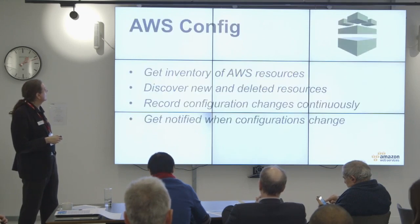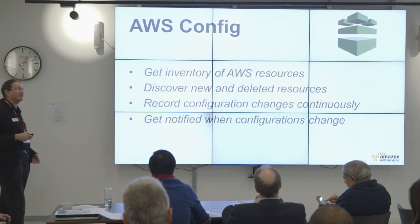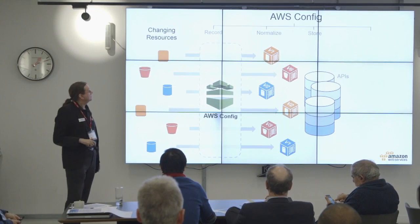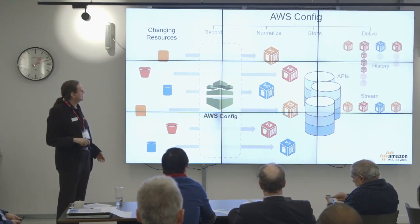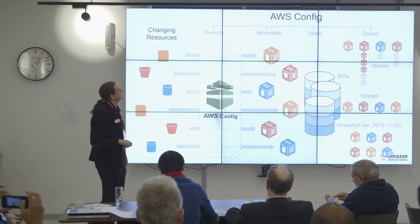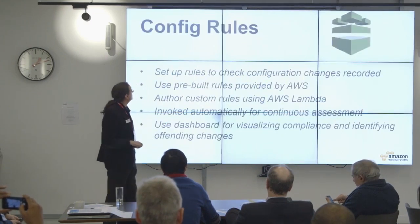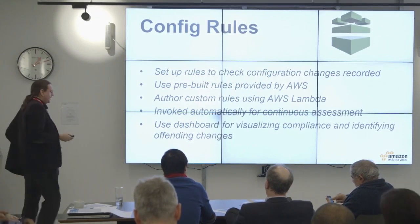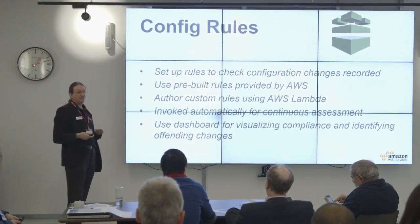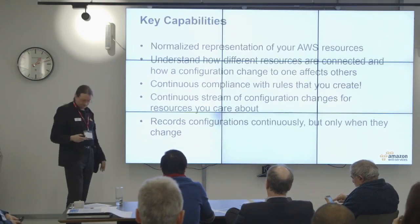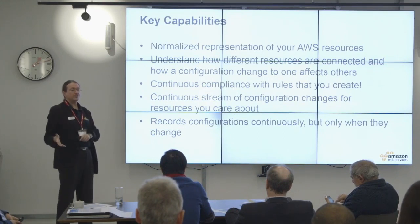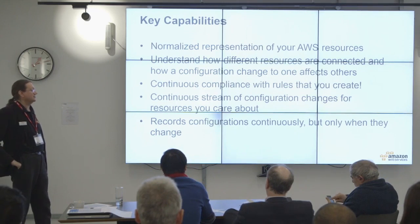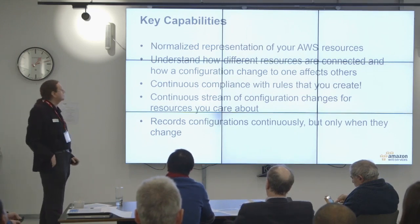Config is essentially a configuration management database — for those of you who cleave to ITIL — whereby changes as they happen in a dynamic environment enable you to get information about the status of your environment at any particular time, with a snapshot capability, or a history of individual assets over time. Config Rules is essentially Lambda integration for Config, so you're able to get events and your own code to run whenever a change happens in your environment. This means that when a change happens, you can trigger arbitrary code written in Python, Node.js, or Java, which will examine the state of your estate, determine whether any changes are undesirable, and either alert you or potentially revert them.